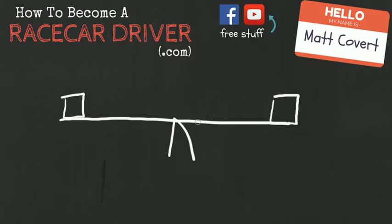So let's say that you wanted to pivot this board back and forth like this. Well, it takes a lot more effort to change the direction of the weights if they're way all the way out here.